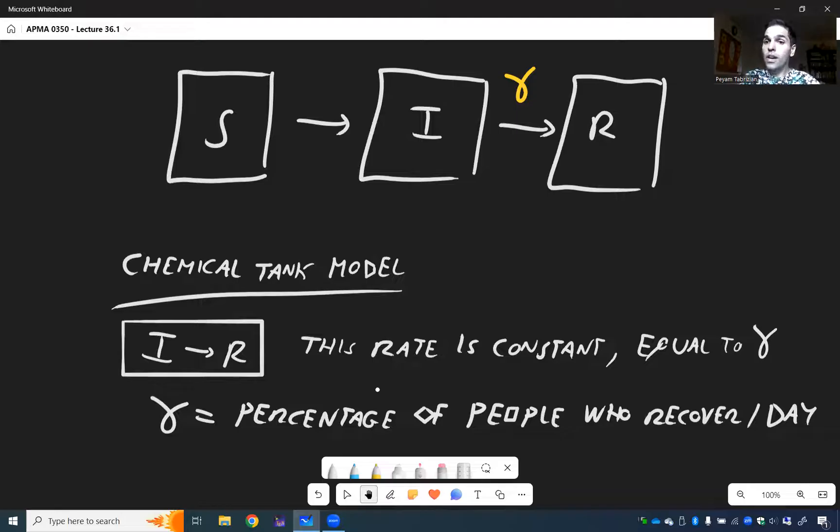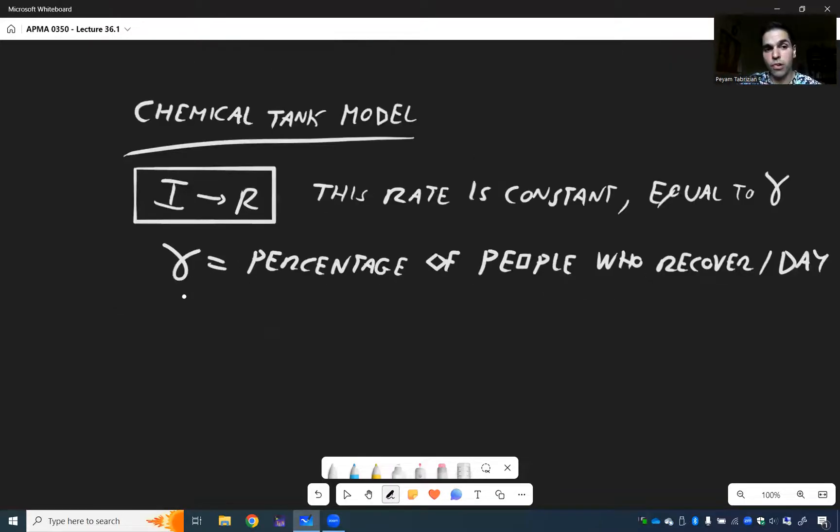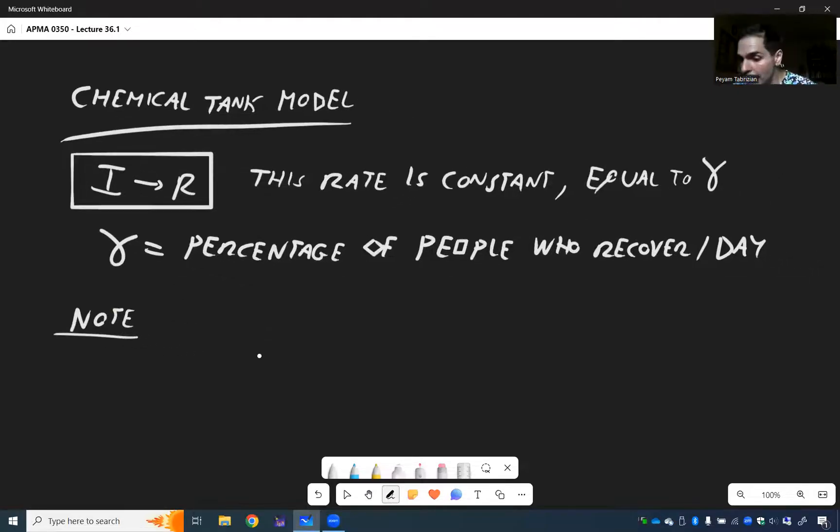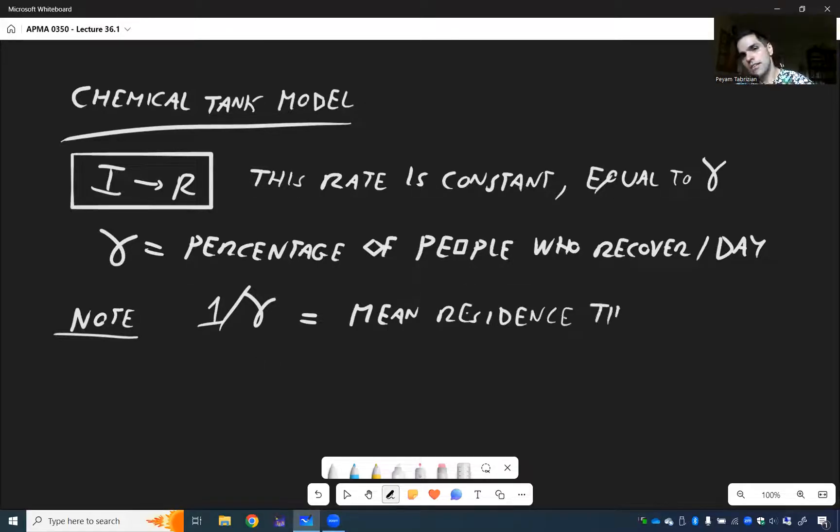And not only is gamma significant, but also its reciprocal. And let me just quickly discuss this. So one over gamma, that thing is called the mean residence time of the disease. It's sort of how long it stays there.